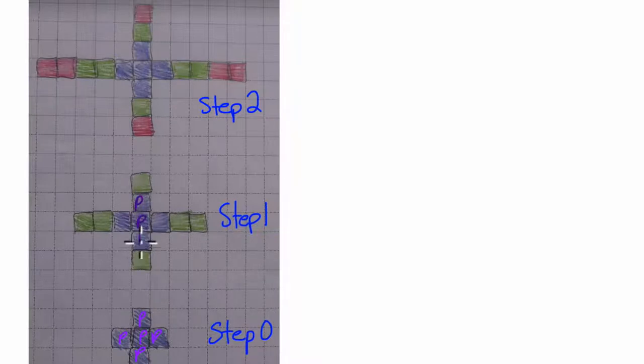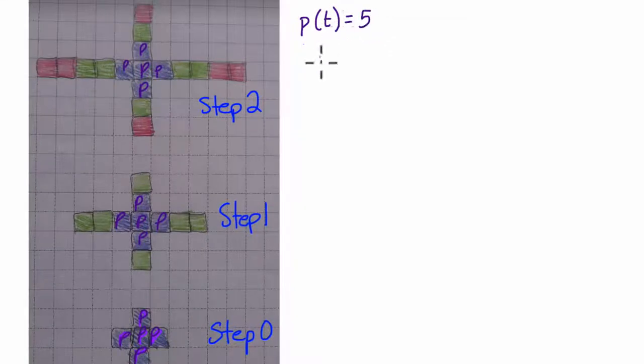I'm going to change the color here. This is 1, 2, 3, 4, 5, another 5 purples in step 1, and another 5 purples in here in step 2. So if this pattern remains the same, we can assume that purple never changes. So it doesn't matter what step number we're on, purple as a function of time is always equal to 5, right? It's never going to change.